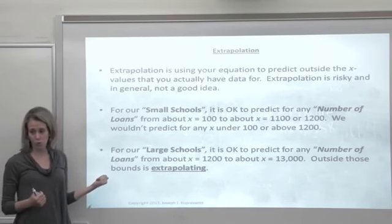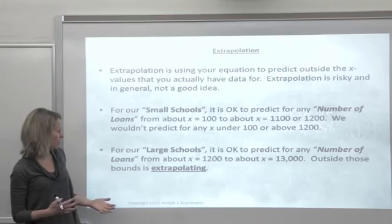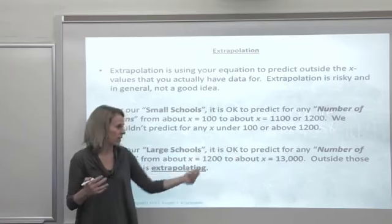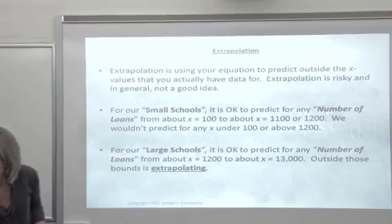For the larger school model, it would be okay to predict any number of loans for schools that issued somewhere around 1,200 to 13,000 loans. Outside those bounds, that would be extrapolating.